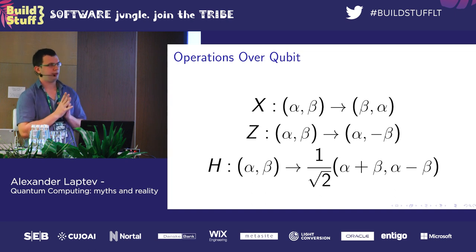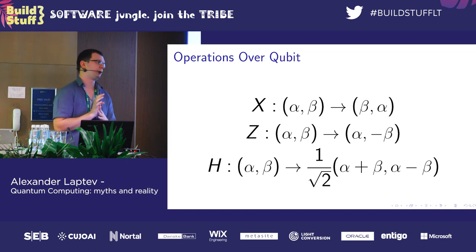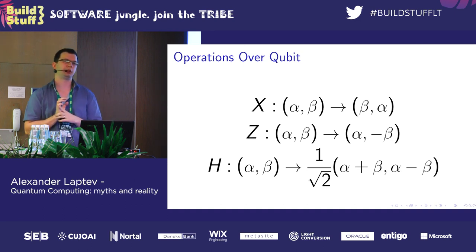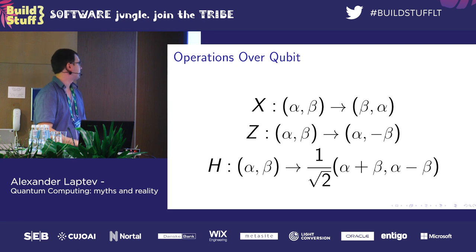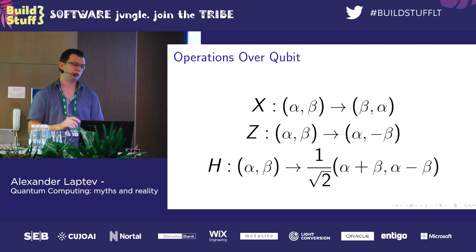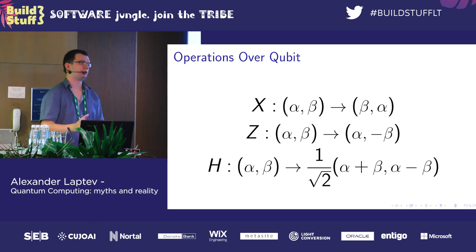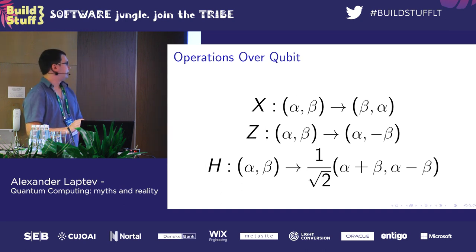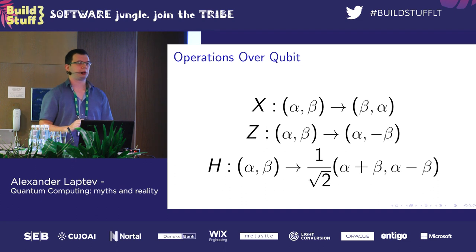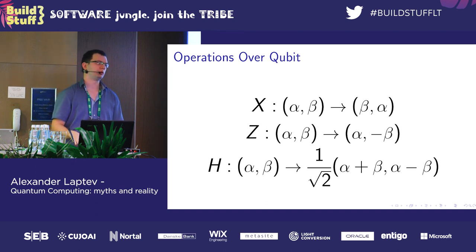Operations can also be applied over multiple qubits. The limitations are the same: every valid superposition is transformed into another valid superposition, and every operation over multiple qubits is also reversible. These two limitations have a mathematical description but we'll skip it for now.